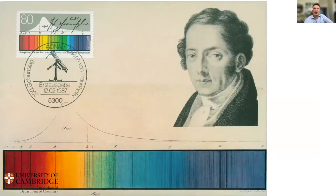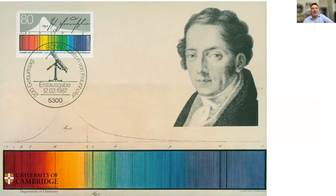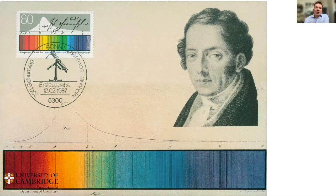Fraunhofer features on a stamp, so we know he must be important. He labeled the strong dark lines simply with letters of the alphabet: A, B, C, D, and so on. In particular, the D line is the dark line in the yellow region. The true nature of these dark lines wasn't really understood until 1859.